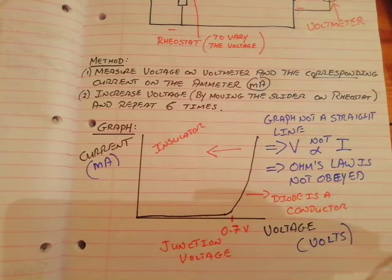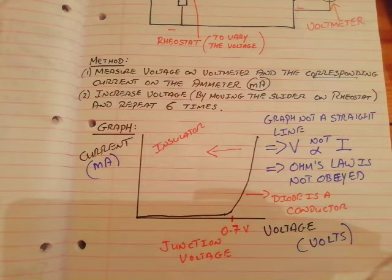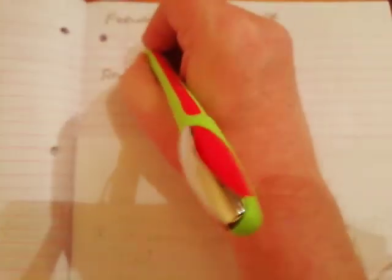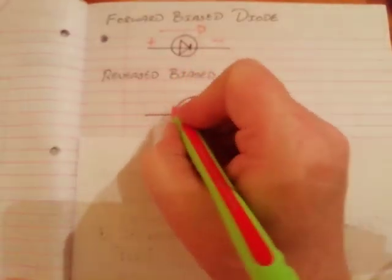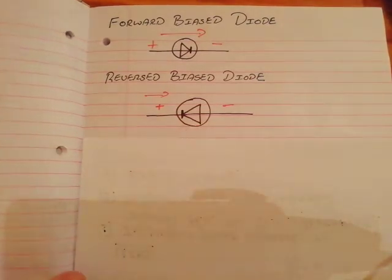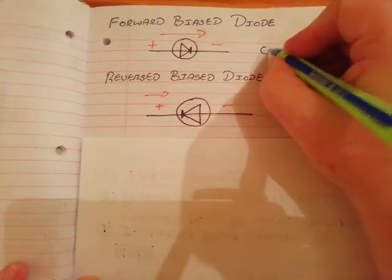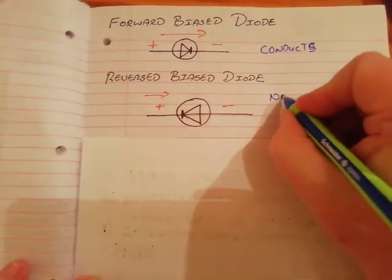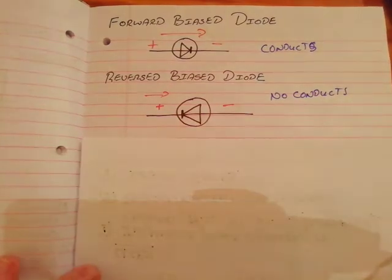There is one little twist they often ask about. Remember: the diode can be forward biased or reverse biased. It's forward biased if the current can flow through it in the direction of the arrow. It's reverse biased if it's turned the other way around and the current goes against the arrow. When the diode is forward biased it conducts; when reverse biased it does not conduct — it is an insulator.